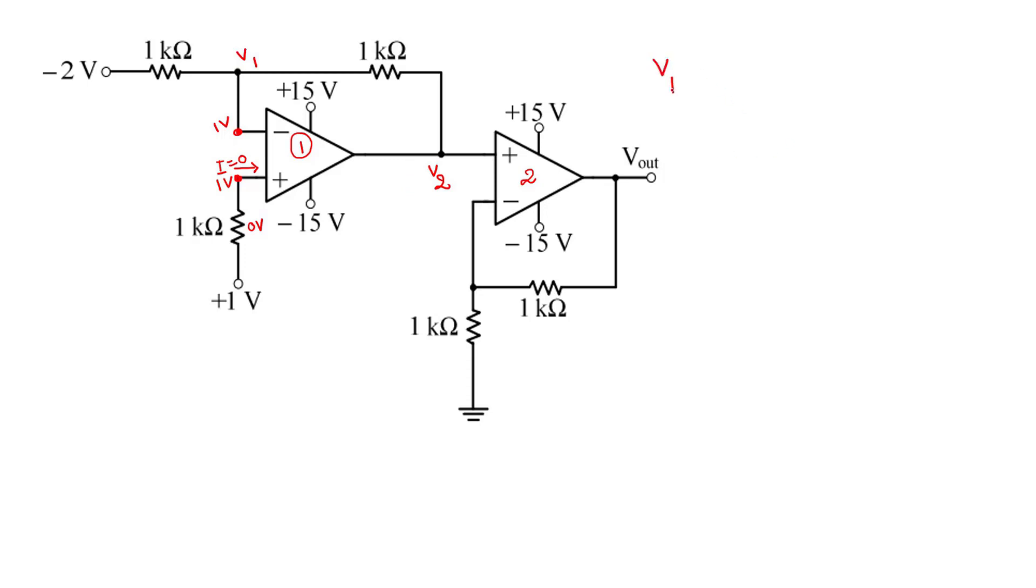(V1 - 2 volts)/1 kilo ohm + (V1 - V2)/1 kilo ohm equals 0. There is no current in this direction because op-amp draws no current. We know that V1 equals 1 volt. After simplifying this equation, V2 equals 4 volts.